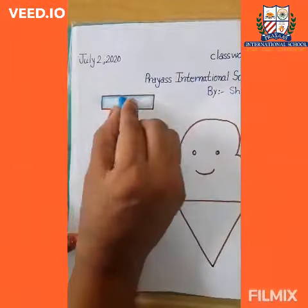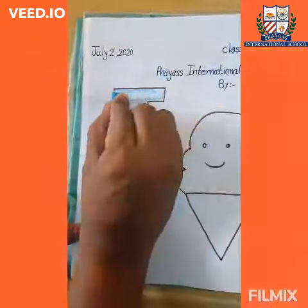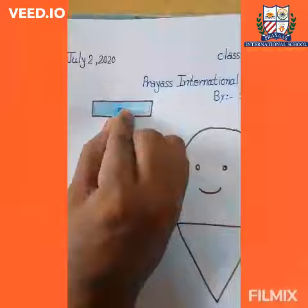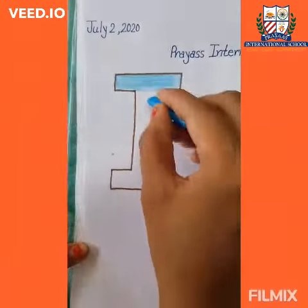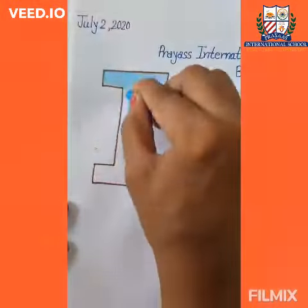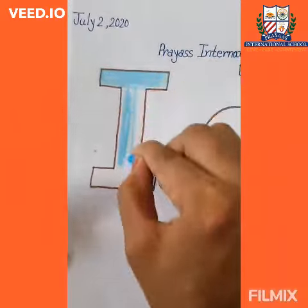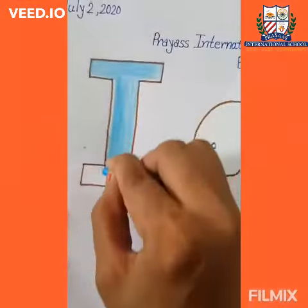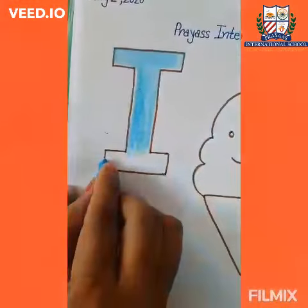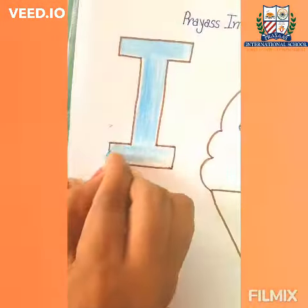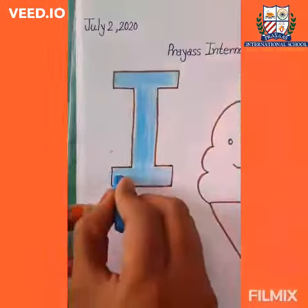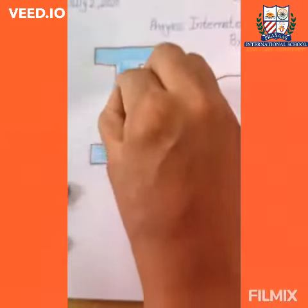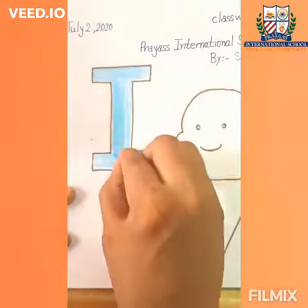First we will color from the edges in sleeping motion, like this. Now we will color in a standing and again in a sleeping motion, like this. Don't leave the white space and fill the color properly, like this.